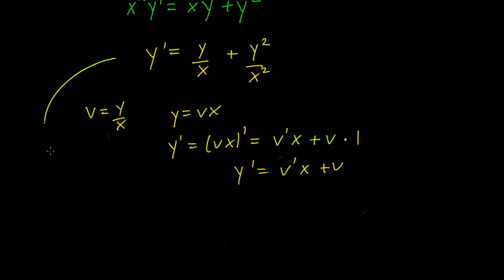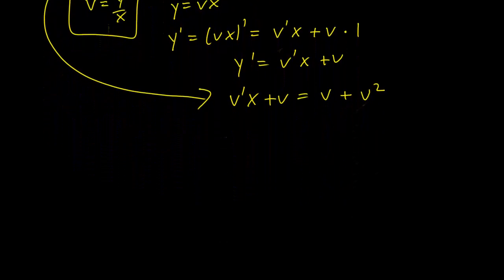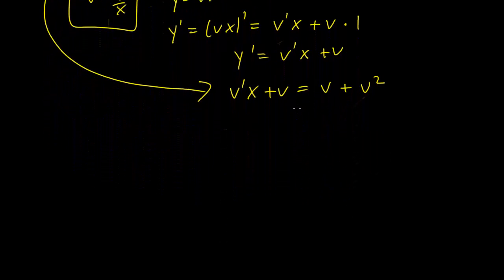Substituting that into the original equation, what we have is v prime x plus v equals v plus v squared because of our substitution. Now, this is going to simplify to v prime x equals v squared.